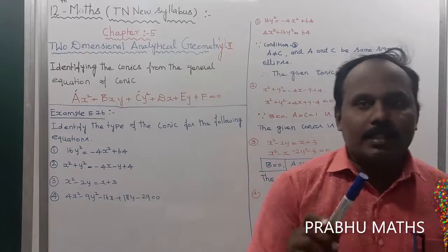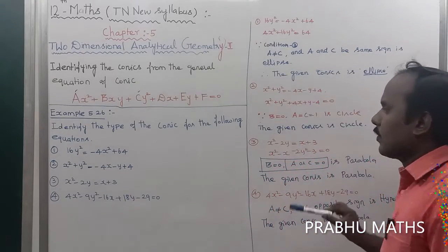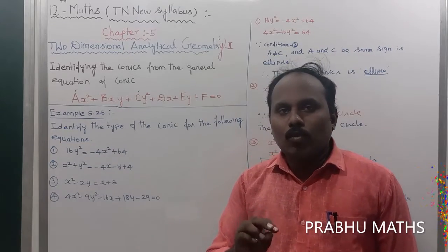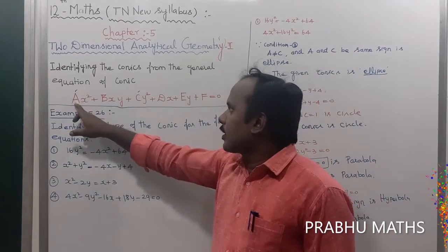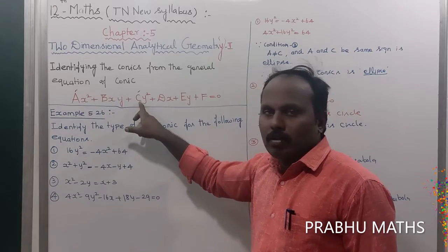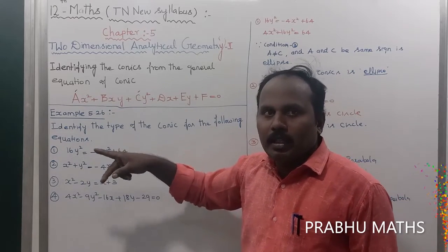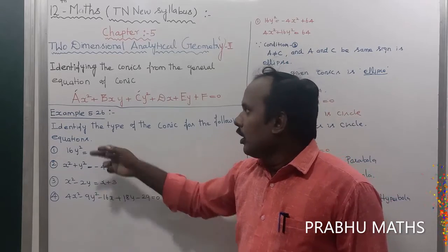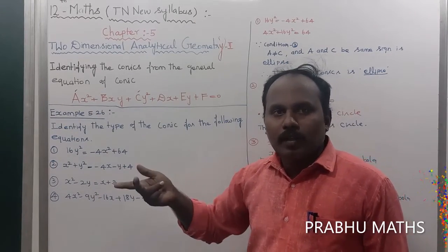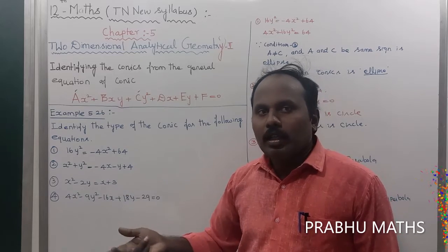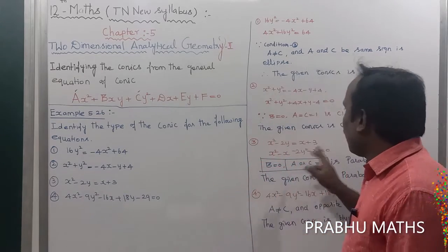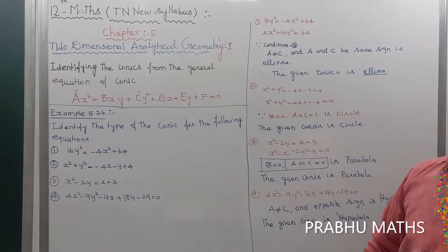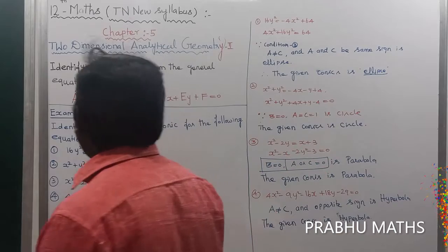To summarize the conditions: if both x² and y² are present with the same sign and a = c, it is a circle. If a ≠ c but both have the same sign, it is an ellipse. If opposite signs, it is a hyperbola. If only one of a or c is present (the other equals zero), it is a parabola. This completes Example 5.26.